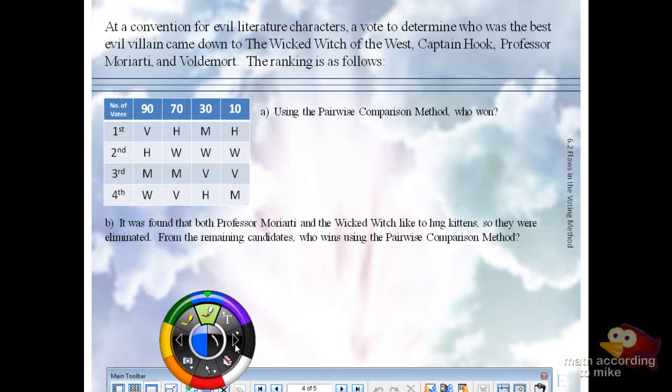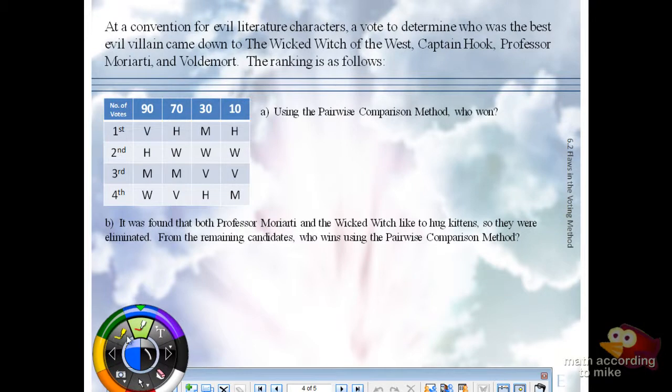Part A: Using the pairwise comparison method, who won? Part B will take out some people to make the setup for the irrelevant alternatives criterion. With four candidates, we'll do Wicked Witch versus Hook, Wicked Witch versus Moriarty, Wicked Witch versus Voldemort, Hook versus Moriarty, Hook versus Voldemort, and Moriarty versus Voldemort.